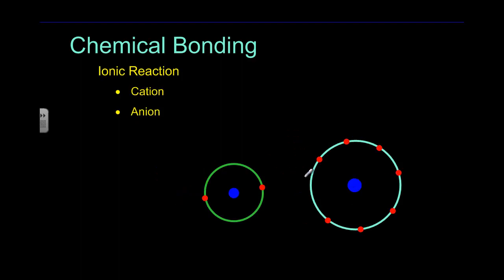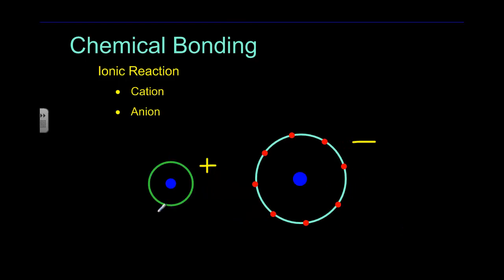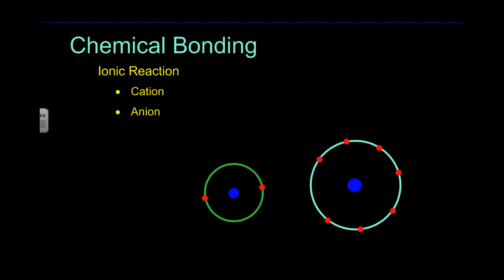Now, when we create something like this, we actually get what's called a cation and an anion. The thing that becomes positive is called a cation. So this guy becomes the cation. And his partner, the negatively charged one, becomes the anion. Anytime you have a negatively charged particle, we're dealing with an anion. Anytime we have a positively charged particle, we're dealing with a cation.